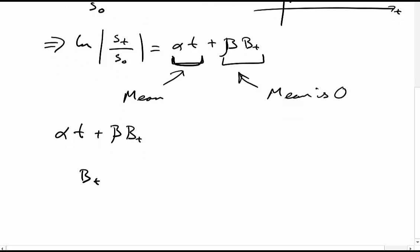Brownian motion is normally distributed. Under standard Brownian motion, B(t) is distributed by a normal distribution of mean zero and variance t.